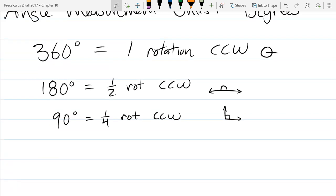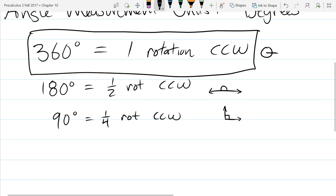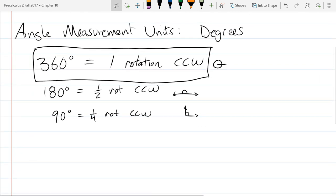So which of these should you remember? I would say remember the one that's easiest. This is the one that I think would be easiest to remember, 360 is one rotation. You probably already have this memorized. So you probably don't need to spend too many brain cells remembering this.